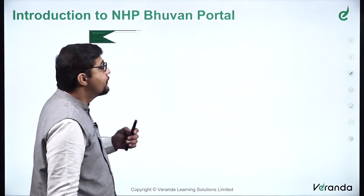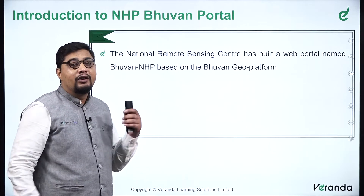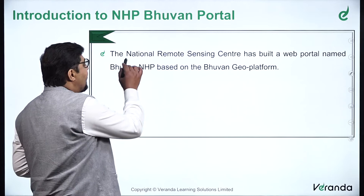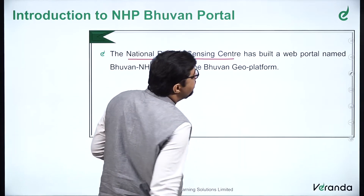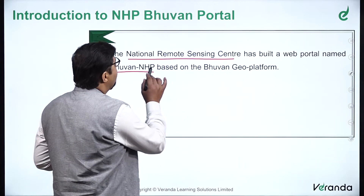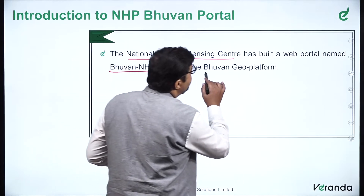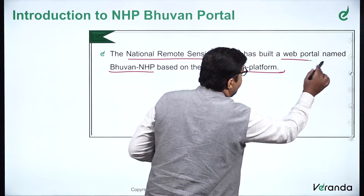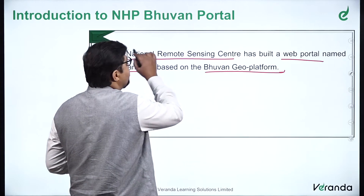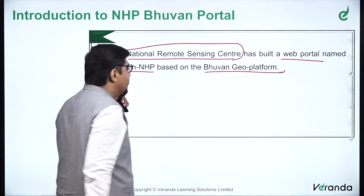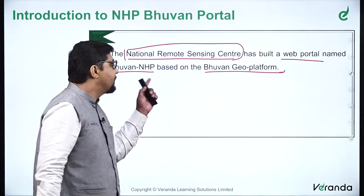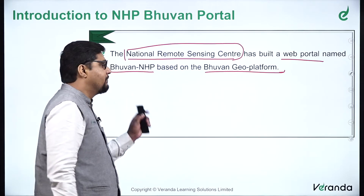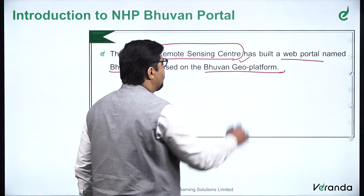Let's first introduce ourselves to what NHP Bhuvan Portal is. The National Remote Sensing Center has built a web portal named Bhuvan National Hydrology Project, based on the Bhuvan Geo Platform. It is a web portal developed by National Remote Sensing Center, also called Bhuvan NHP or NHP Bhuvan — same meaning. It is created on the Bhuvan Geo Portal.